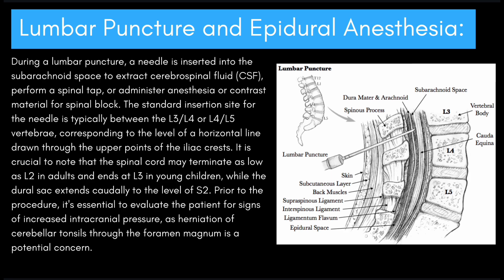We're going to start off this review by talking about lumbar punctures and the associated epidural anesthesia. During a lumbar puncture, a needle is inserted into the subarachnoid space to extract cerebrospinal fluid, perform a spinal tap, or administer anesthesia or contrast material for a spinal block. The standard insertion site is typically between the L3-L4 or L4-L5 vertebrae, corresponding to a horizontal line drawn through the upper points of the iliac crest.